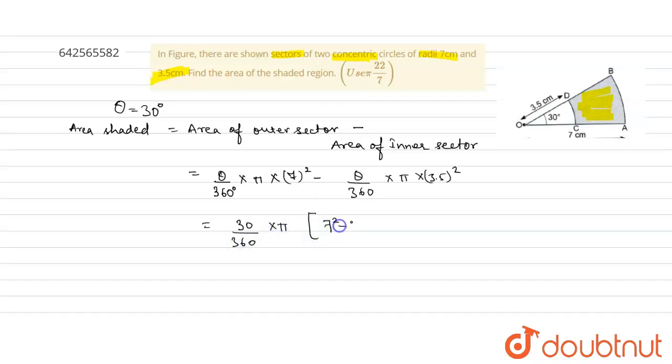7 squared minus 3.5 squared, which will be 1 by 12 into pi into 7 minus 3.5 into 7 plus 3.5.